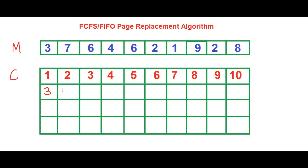In the second iteration, 7 wants to come in, but the cache memory is not full, so 7 is brought in directly. At the third iteration, 6 is brought down onto the cache memory. All these are page faults but no eviction is needed yet.